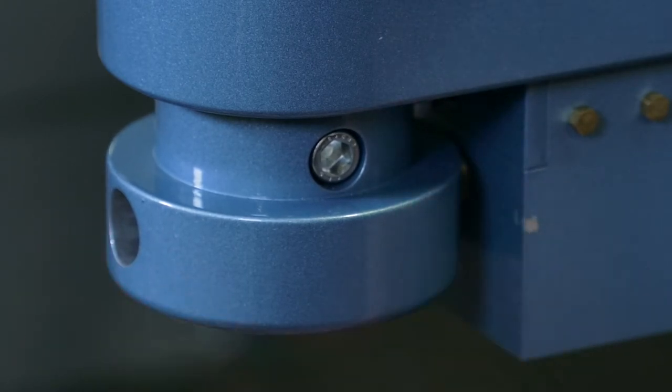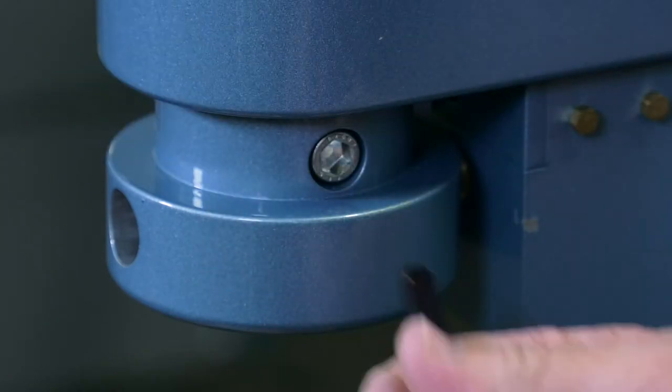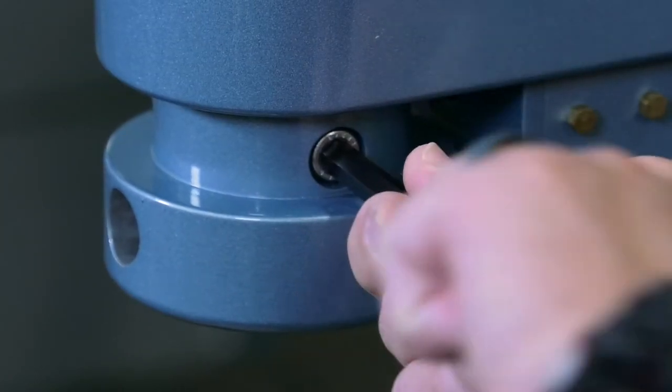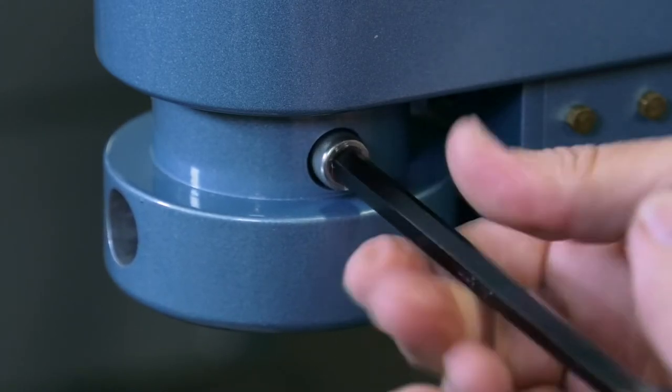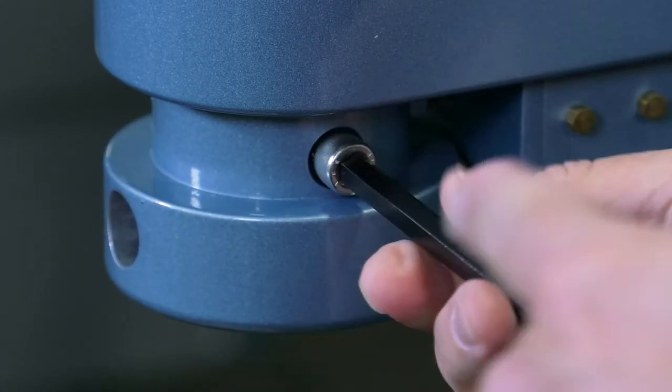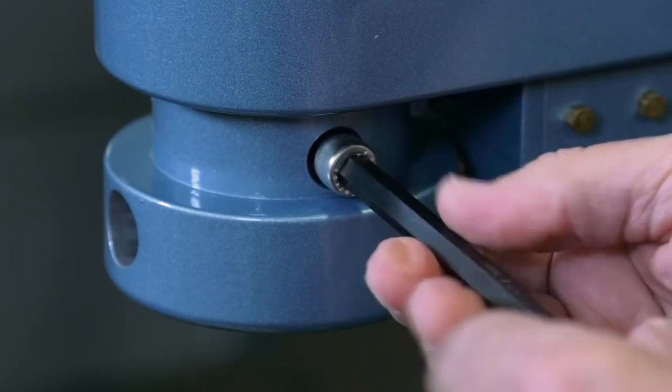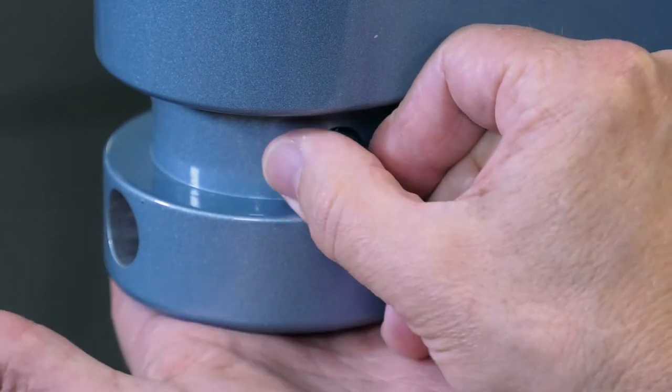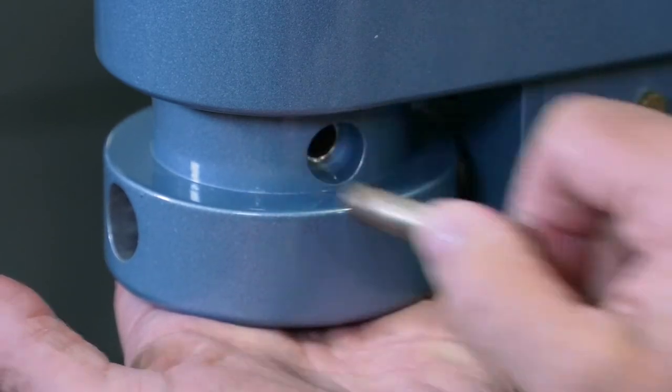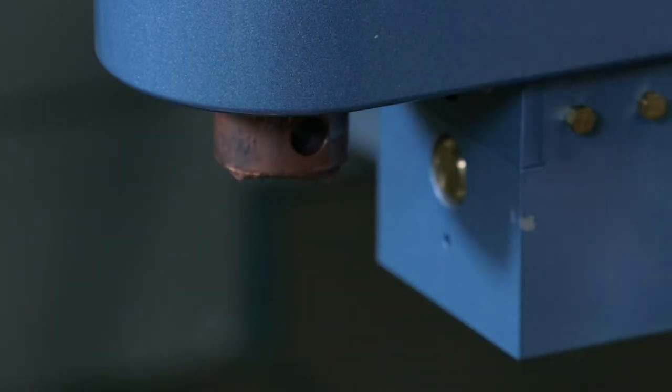The first step is to take off the lower hinge cover, or the hockey puck. We do that by removing this Allen bolt. This is more of a pin that goes all the way through the shaft, so when you loosen it completely, it'll slide out. Hold your hockey puck, pull the pin, and it'll slide straight down.